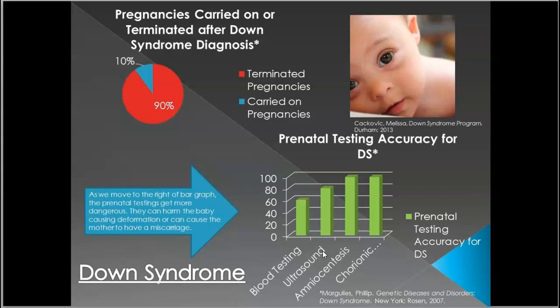Ultrasound, using sound waves to see the baby, is definitely more accurate and not very invasive, but it's still not foolproof. Then we have two tests — amniocentesis and chorionic villus testing — which are close to completely accurate in diagnosing. But these are definitely more dangerous, because amniocentesis, for example, involves sticking a needle very close to the baby to draw out amniotic fluid, which has more of a chance to cause harm to the child.